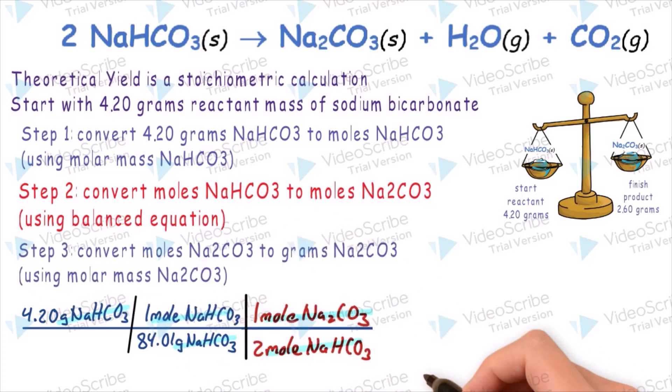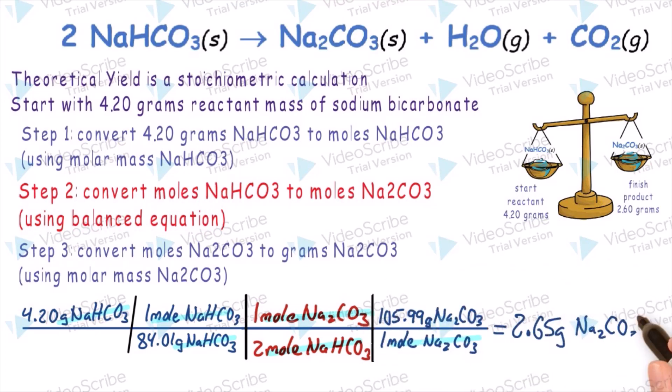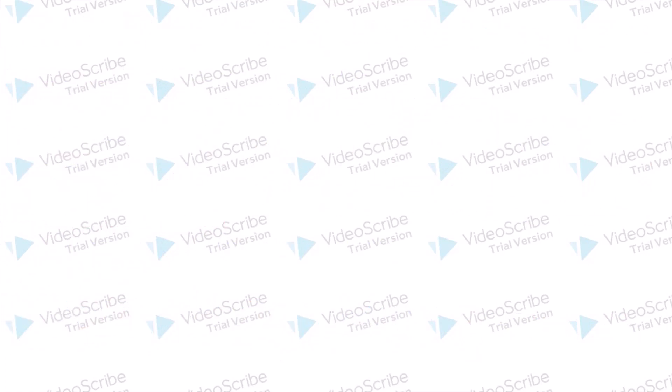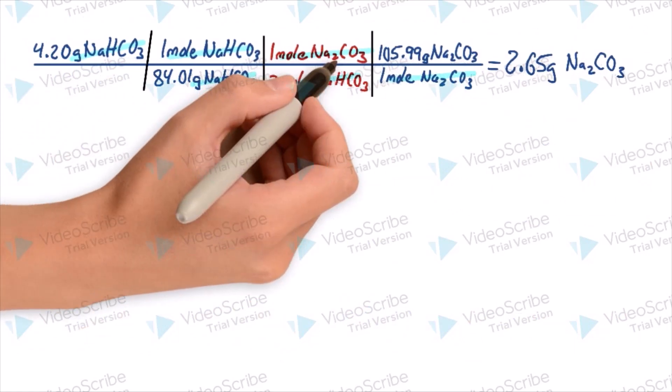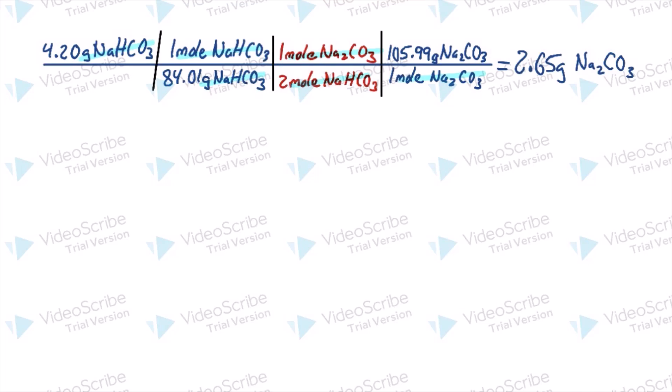Step 3, we convert moles of sodium carbonate to grams of sodium carbonate using the molar mass. And this gives us the theoretical yield. So the theoretical yield we found to be 2.65 grams of sodium carbonate.